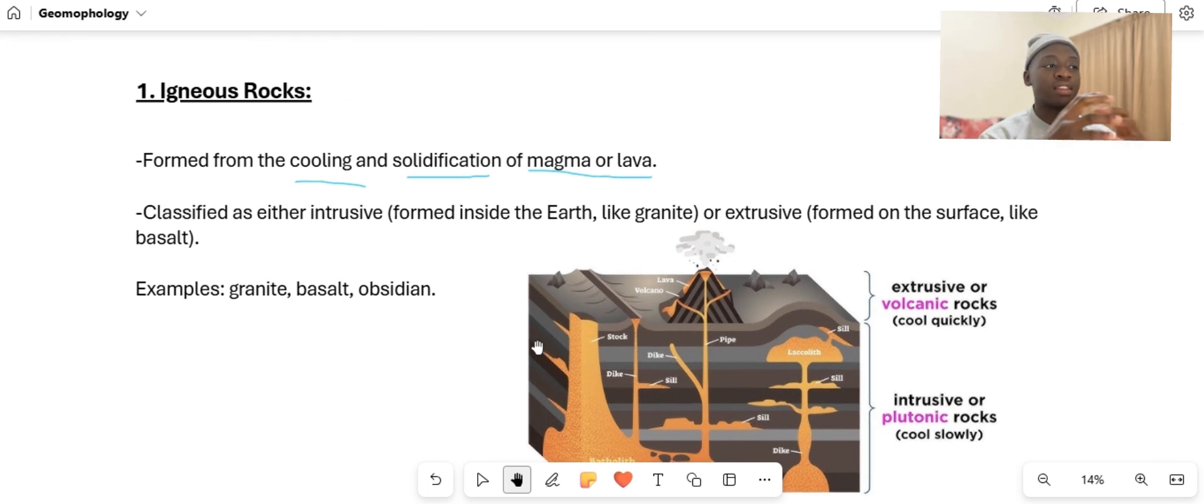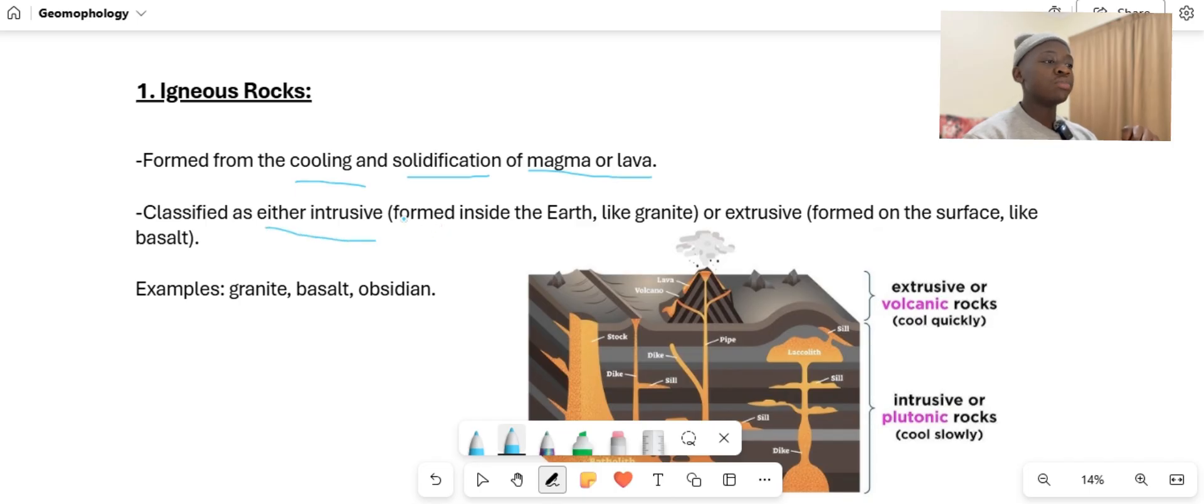Magma and lava are two different things. I'm going to explain it in the last part of the video. Igneous rock can either be intrusive, which means they are formed inside the earth, or extrusive, which means they are formed on the surface like the basalt rock. Examples of igneous rocks can be the granite rock, the basalt, or the obsidian rock.